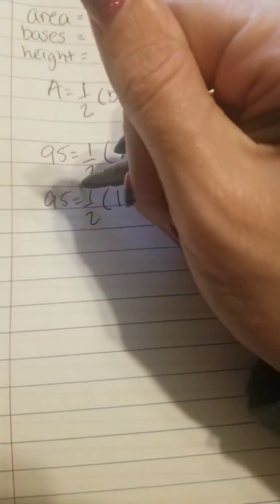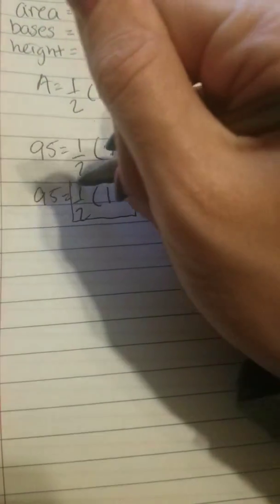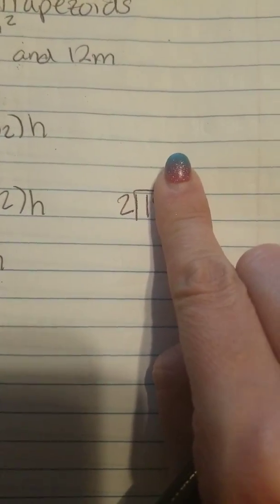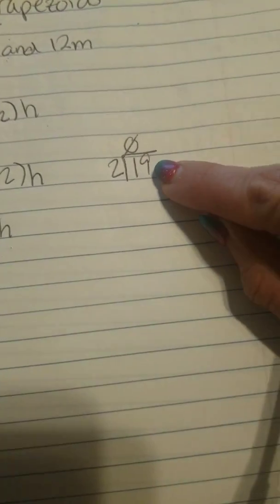Then I'm going to take half of 19. In order to do that, all you do is 19 divided by 2. If I have 1, can I make a group of two? No. So we put a zero there. If I have 19, can I make groups of two? All you have to do is use your multiplication facts and determine how many groups of two can you make to get as close to 19 without going over.